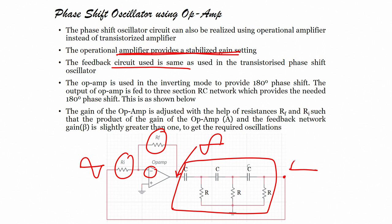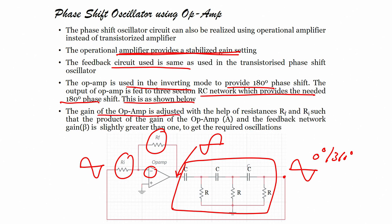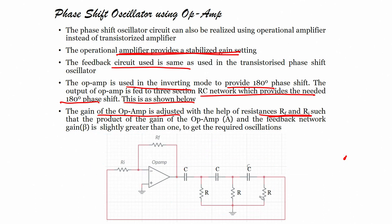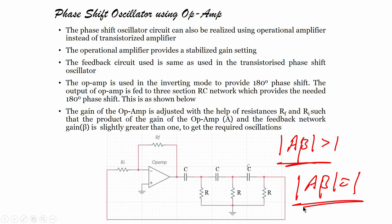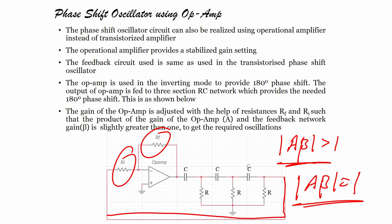The 180-degree phase shift from the op-amp is provided to the RC network. At the input of the op-amp, the total phase shift is 0 or 360 degrees. The op-amp is used in inverting mode providing 180 degrees, the RC network provides 180 degrees. The gain of the op-amp is adjusted with R_F and R_I such that A·β is slightly greater than 1 to get the required oscillations. To start oscillations A·β > 1; once oscillations are sustained A·β = 1.